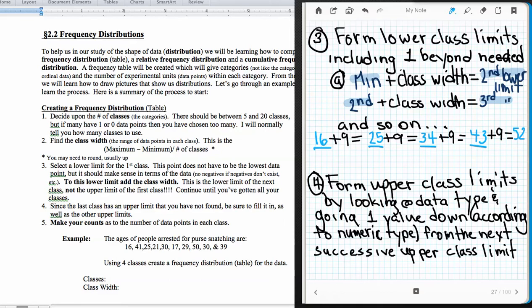Finally, what I'm going to do is I'm going to form the upper class limits by looking at the data type. So all discrete numbers again, right? And going one value down according to the numeric type. So one down by ones. And then I'm going to form the next successive upper class limit from the next successive lower class limit. So this is not upper. This should say lower class limit. So let me erase this so it doesn't confuse us. So this should say lower class limit. So what we're going to look at is that we would be doing 16, to something, and then 25, to something, and then we would have 34, to something, and then 43, to something, and then 52, to something. So we're looking to fill in this number based upon this number here. So this number will be used to tell us what that is. So that's what this says, right?